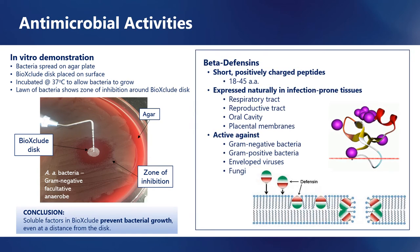Though it's likely that multiple factors are involved, beta-defensins are thought to be important contributors to this effect. Beta-defensins are short, positively charged amino acids that are expressed naturally in infection-prone tissues, including the respiratory tract, the reproductive tract, the oral cavity, and of course placental membranes. Beta-defensins are active against gram-negative and gram-positive bacteria, as well as enveloped viruses and fungi. One way that they are thought to kill bacteria is shown in the illustration: beta-defensins embed themselves into the membranes of bacteria and assemble together to effectively punch holes in the membrane and kill the bacteria.